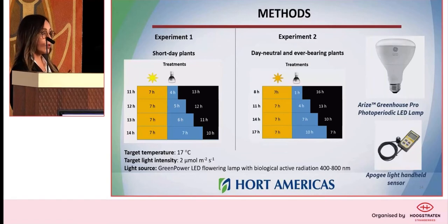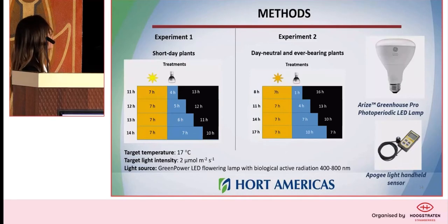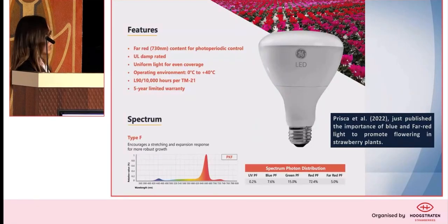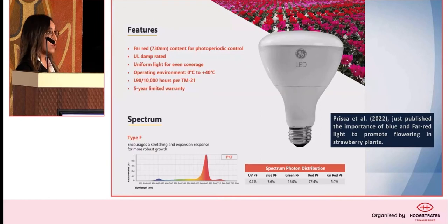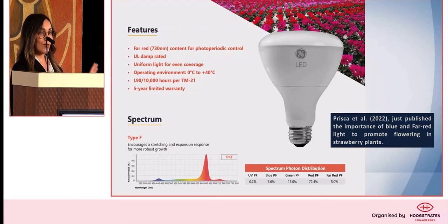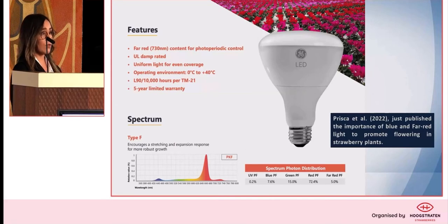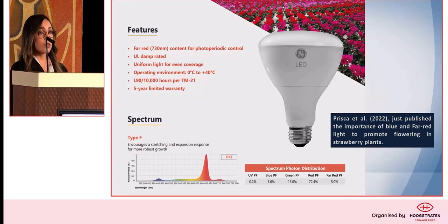We were able to extend the photoperiod without extending the DLI significantly. This is an example of a photoperiodic lamp. If you are interested in testing photoperiod or delivering a treatment only trying to trigger a photoperiodic response, you can use this lamp. It is very low light intensity and won't promote growth — it's only used to trigger photoperiodic response, to promote or inhibit flowering. We also know that far red is really important for flowering, so this lamp also has a little bit of far red.